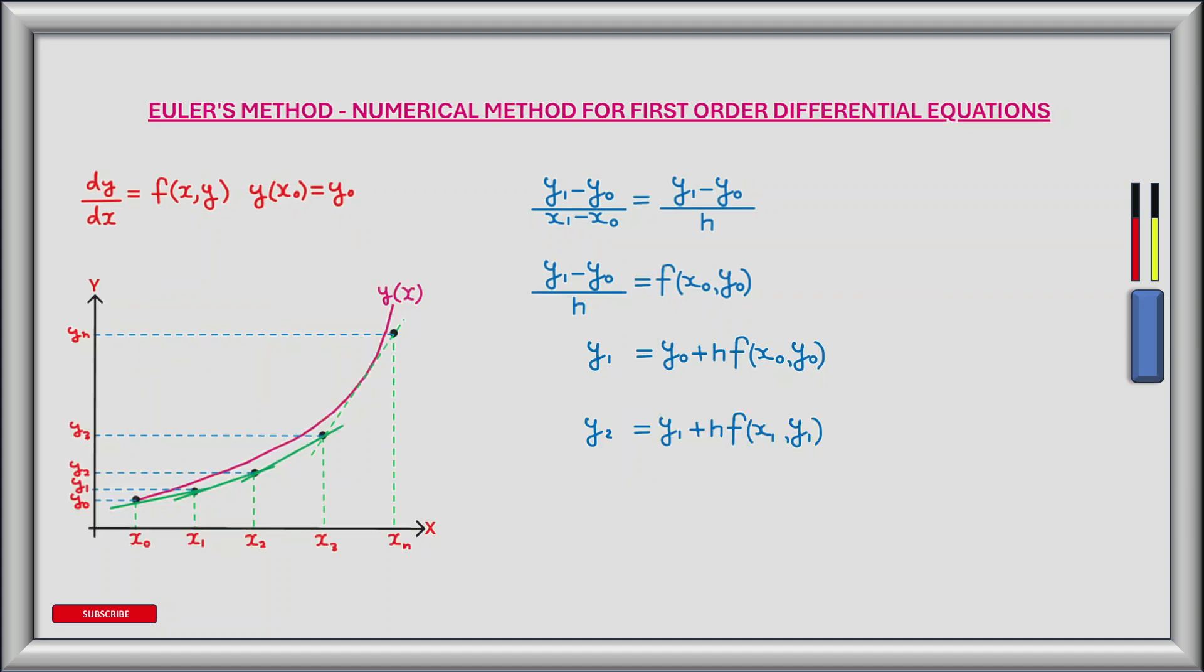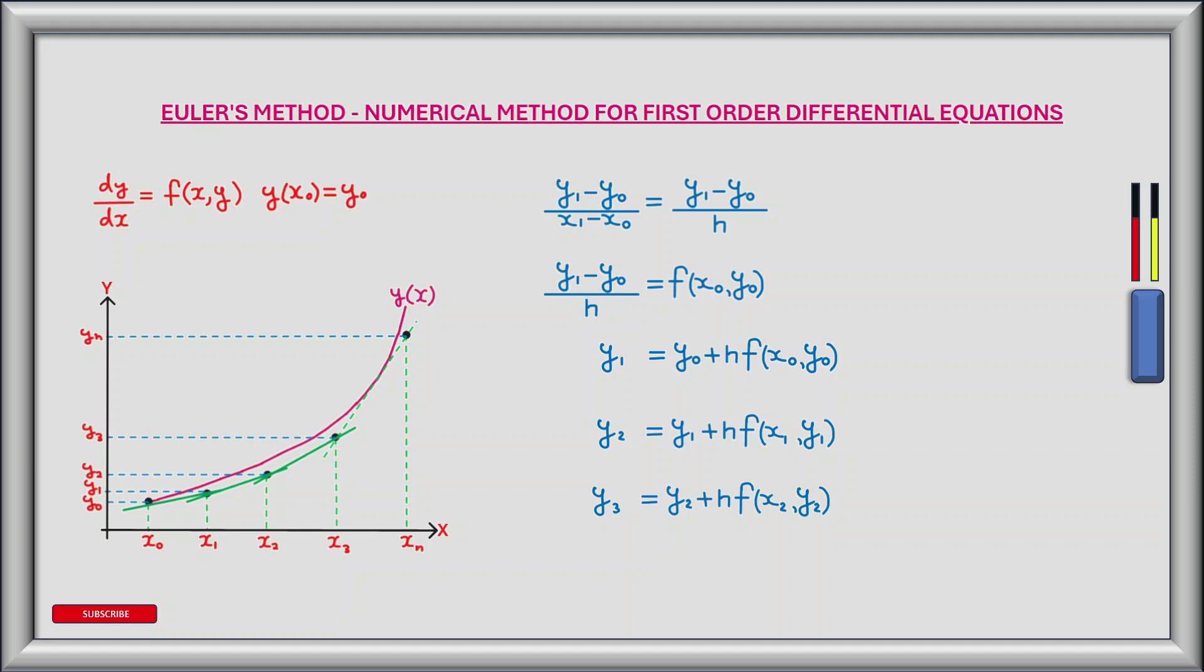We now have a new starting point (x₁, y₁). We can now repeat this process by stepping along the x-axis by a distance x₁ plus h until we reach x₂ and calculate the corresponding y value y₂. We can calculate y₃ in the same way.